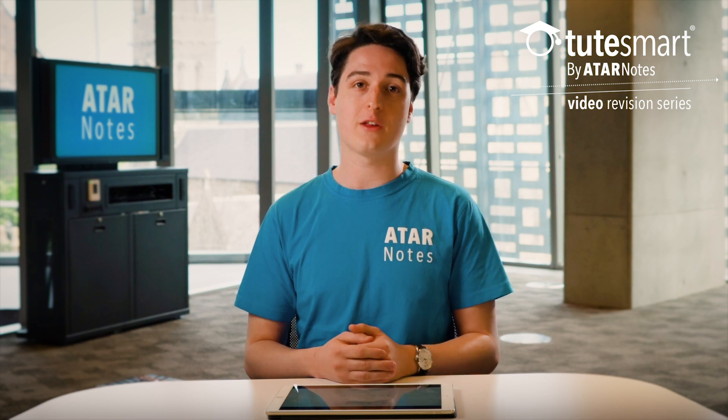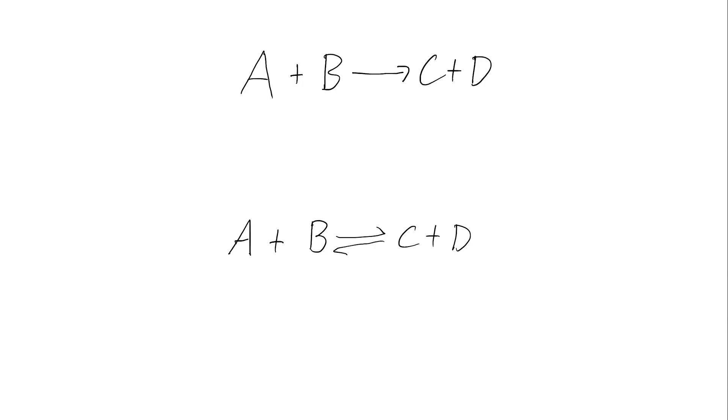However, in the HSC course, you'll be introduced to a new type of reaction. These reactions are called reversible reactions, and they're denoted by A and B, then a double-headed arrow in the middle, becoming C and D. What's different about reversible reactions is that whilst the reactants can become the products, like in any other reaction, the products can also become the reactants. And that's what that arrow in the middle represents.